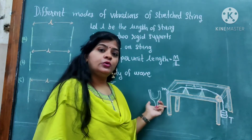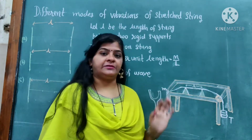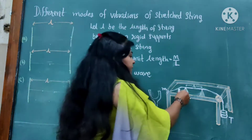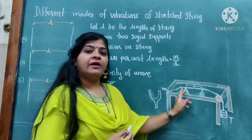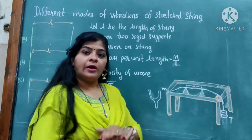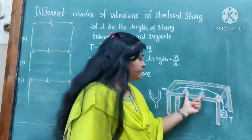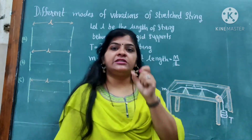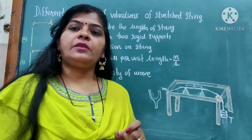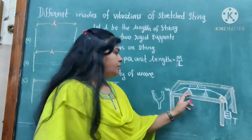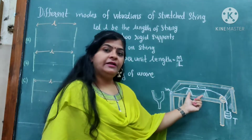Next, the tuning fork is used. This is a tuning fork which is used to vibrate this string. When we are using the tuning fork and keeping it on this table, then because of the vibration of the table the string starts vibrating. When the string starts vibrating, in between these two knife edges — which we call as rigid supports — the distance between these two knife edges is the vibrating length, L.